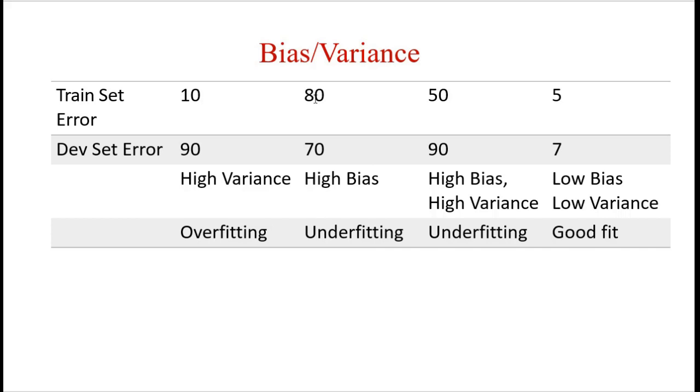Second example: we have 80% error in the training set and 70% error in the dev set. Then it is called high bias. Why? Because we have to first concentrate on training error. Training error itself is very high, so our model is highly biased. It is also called underfitting.